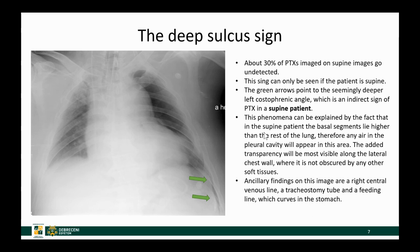However, if the patient has a pneumothorax, a specific sign — the so-called deep sulcus sign — might be visible. This phenomenon can be explained by the fact that in the supine patient the highest point of the chest cavity is no longer the apical area, but instead it's the anterior basal area. So the added transparency caused by the pneumothorax causes structures there to become more visible and causes deepening of the lateral sulcus.